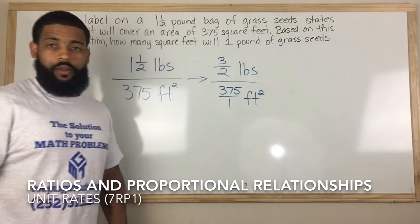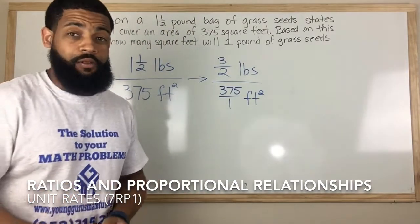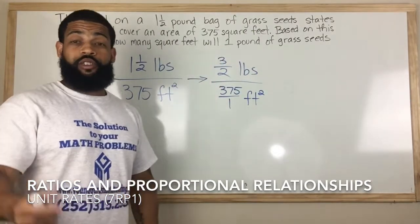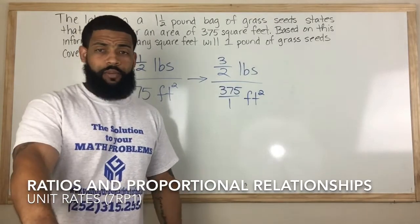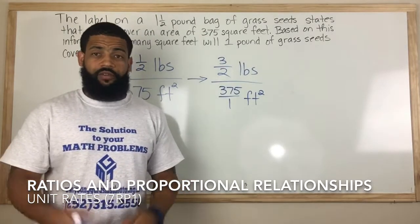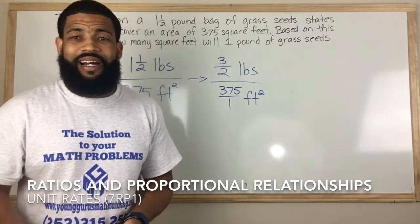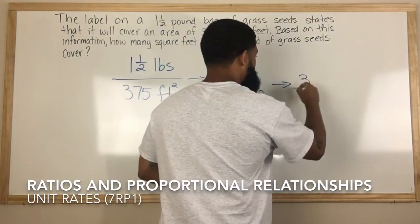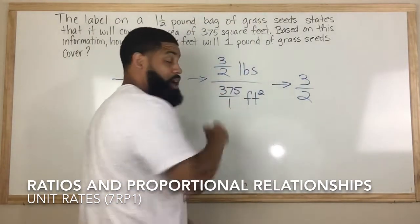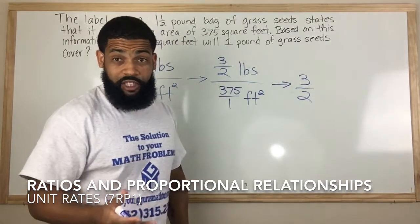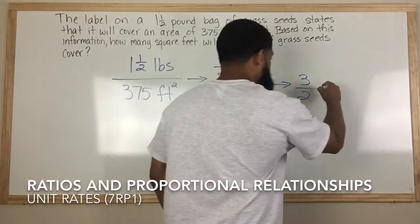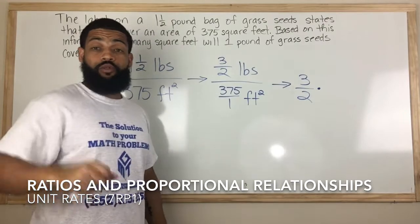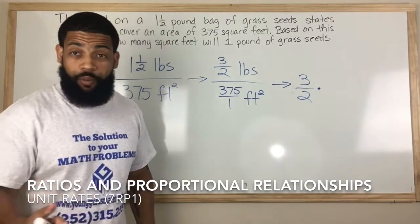Now we need to break this down. When you have a fraction over a fraction, we want to use the keep-change-flip concept. Different people teach it different ways, but what that says is: we keep the first fraction — so we keep the 3 over 2 — we change the fraction bar from division to multiplication, and then we flip the second fraction. The mathematical term for that is the reciprocal.